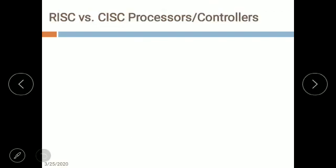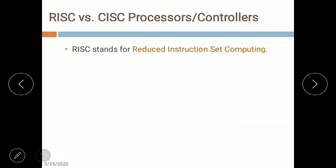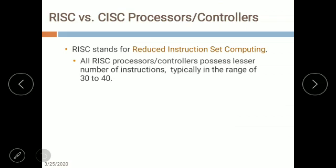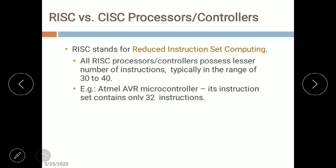Let me explain the difference between RISC and CISC. First, all of us should know what RISC and CISC mean. RISC stands for Reduced Instruction Set Computing — it has very limited instructions in the range of 30 to 40. A very good example of RISC architecture is the Atmel AVR microcontroller, which has only 32 instructions.